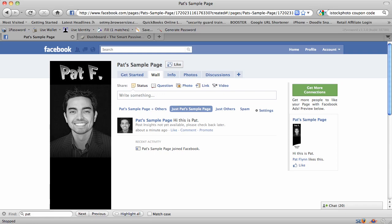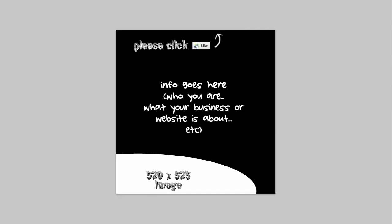The first thing you're going to need is an image — your image is essentially the landing page, the whole JPEG image. I created a quick one in Photoshop. I'll have this PSD file available because it includes the like button you can borrow. The correct size is 520 pixels wide; the height can be whatever you want, but I have it at 525, and I'll show you why in a second. You want to put information about yourself, why people should like you, what your business is about, and how you can help them if they become a fan.